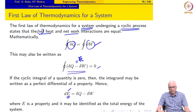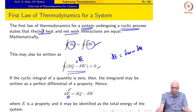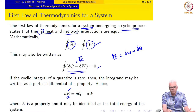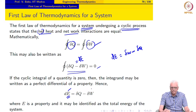You may wonder why we chose to write it as dE equals delta Q minus delta W, rather than dE equals delta W minus delta Q. Mathematically, we could have written the cyclic integral of (delta W minus delta Q) equals 0. But for the sign convention we have adopted, writing it as delta Q minus delta W is consistent.